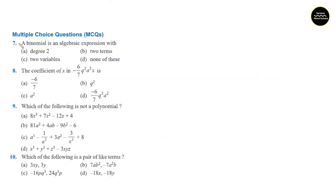Next are multiple choice questions. Section number 7: a binomial is an algebraic expression with how many terms? Binomial means 2 terms — don't confuse with degree 2. Degree means the power to which a variable is raised. Question number 8: the coefficient of h in minus 6 by 7 q square a square h. Excluding h, whatever remains is the coefficient. After excluding h we get minus 6 by 7 q square a square. So option number d is the right answer.